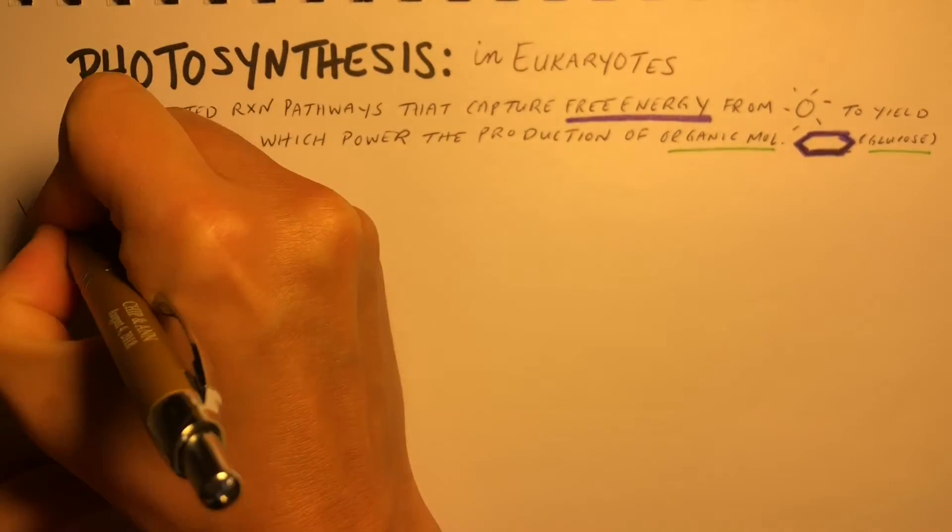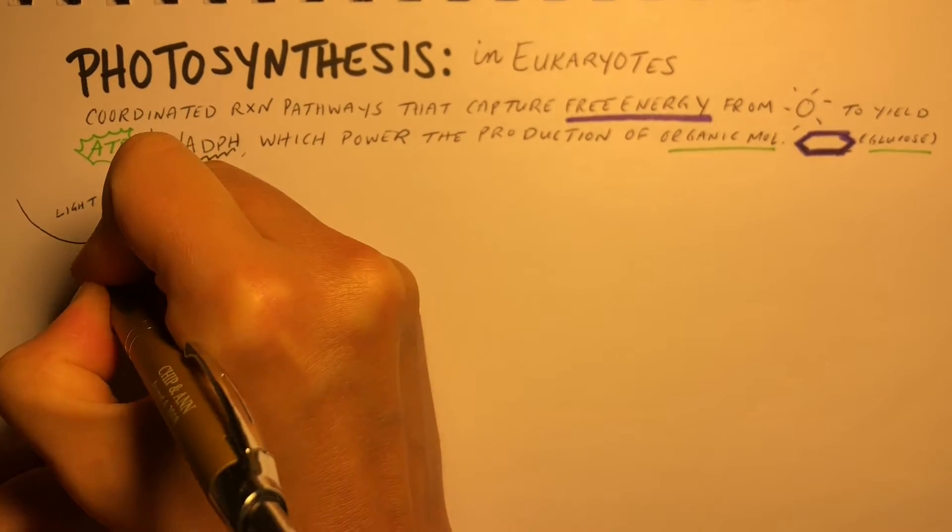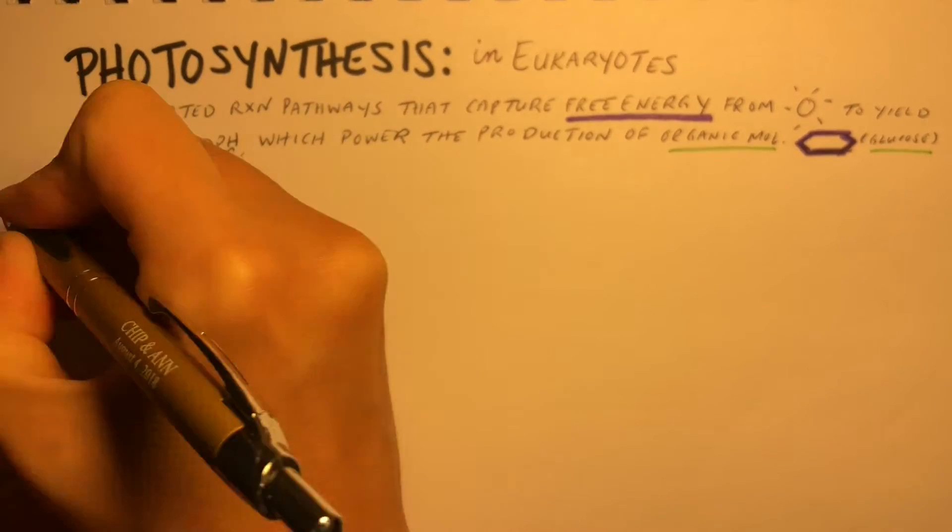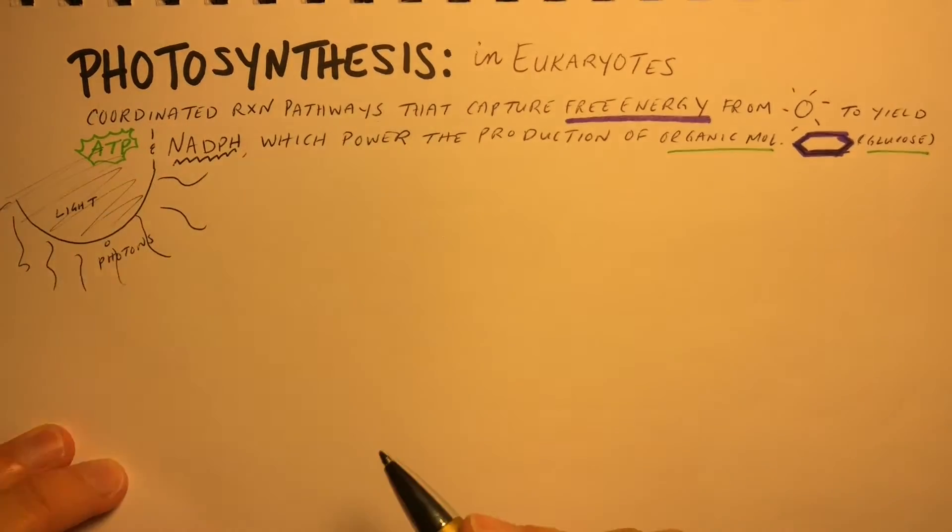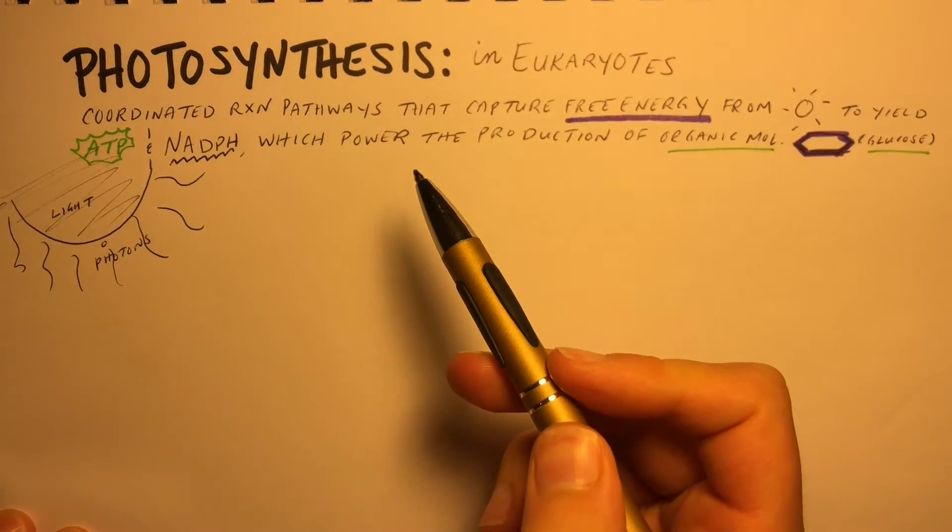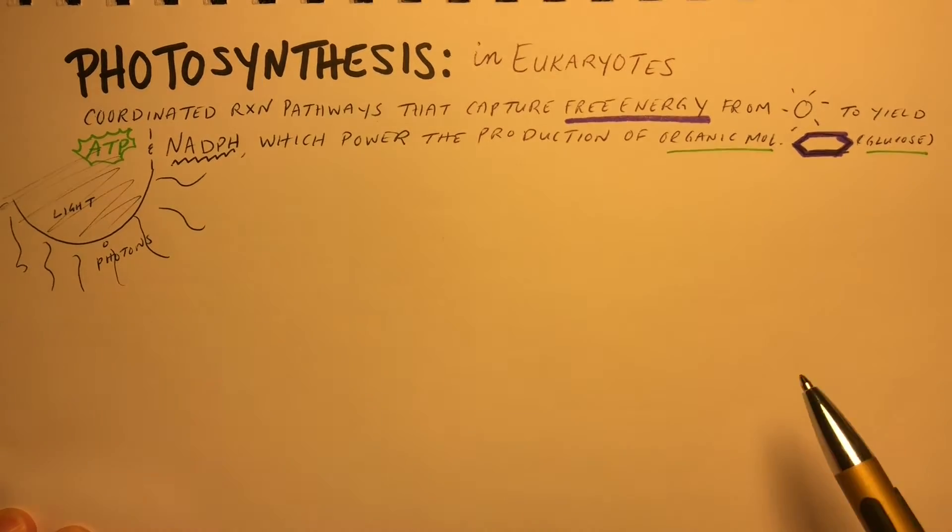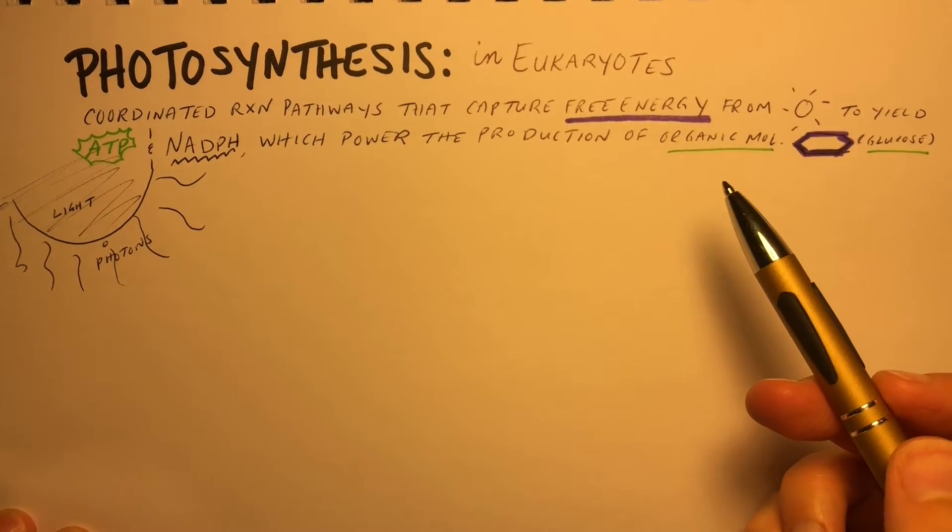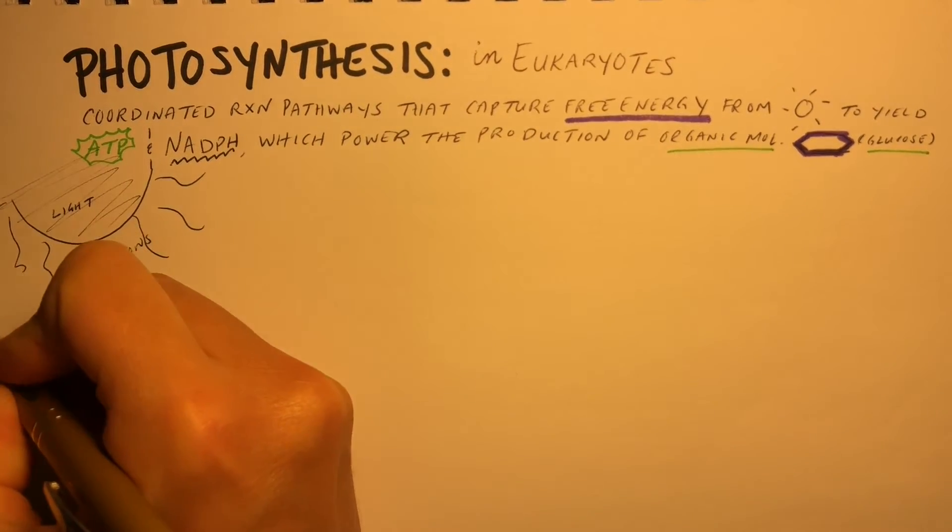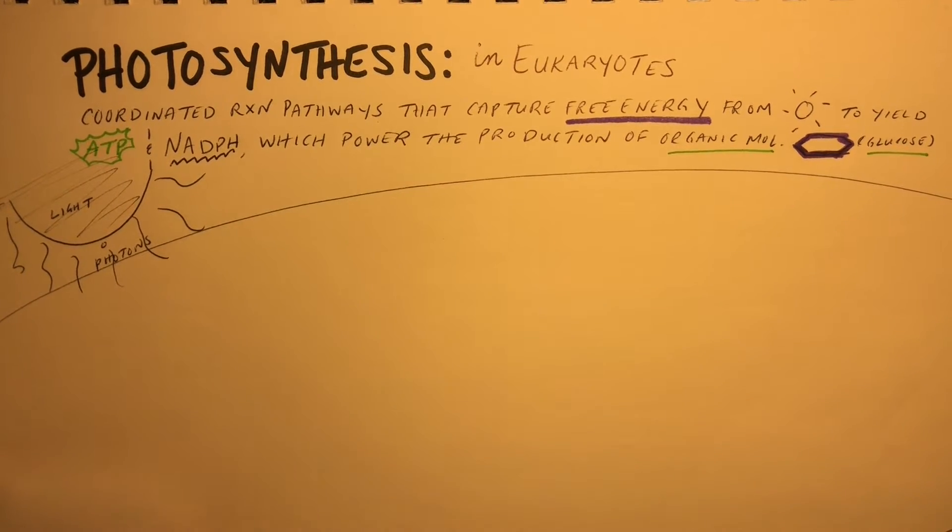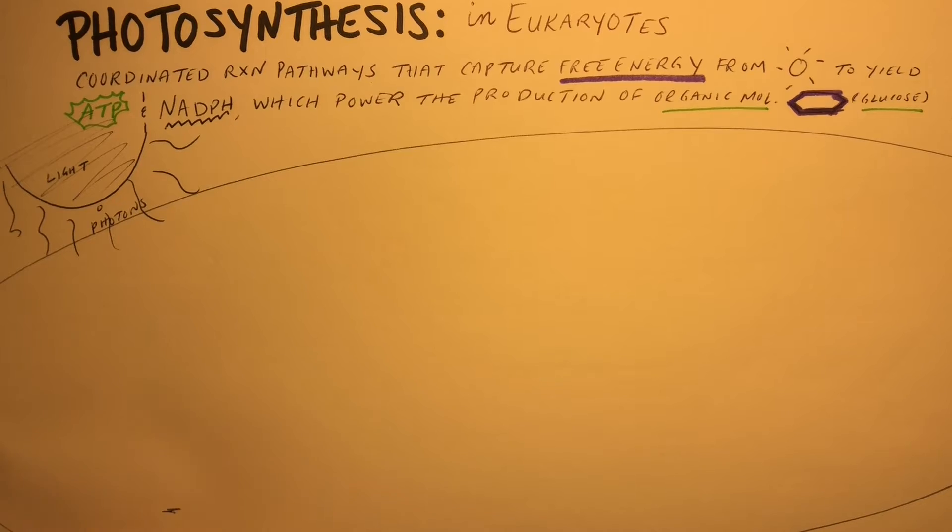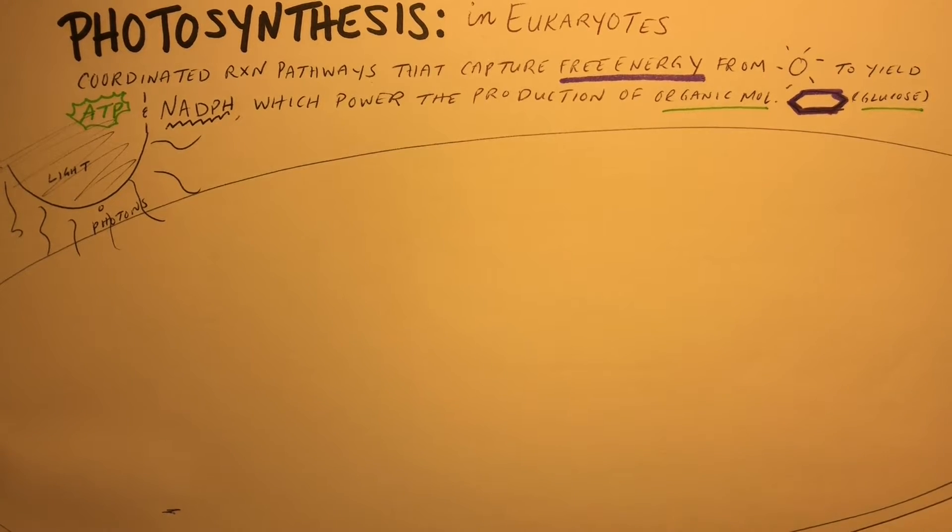Let's start with the sun, because the sun is the ultimate source of energy for all life on Earth. Now the location of photosynthesis is inside the chloroplast, and there are several specific structures within the chloroplast that we're going to highlight today. So let's start by drawing our chloroplast, which is a membrane-bound organelle.